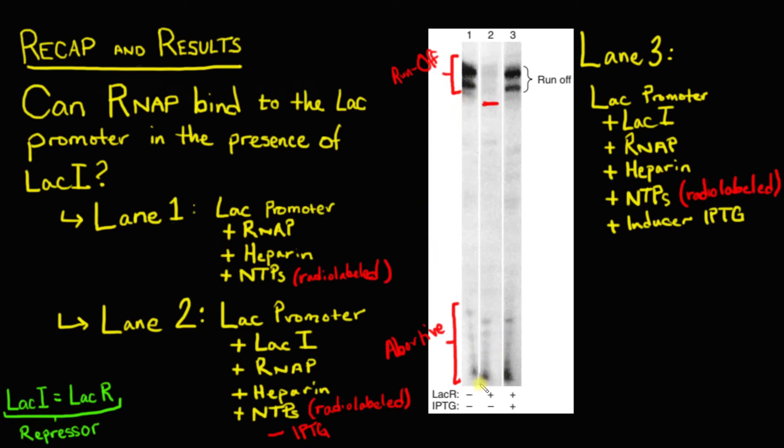So there's nothing to remove the repressor and we get no runoff transcripts. However, intriguingly, we do see the formation here of these abortive transcripts once again. So this indicates that RNA polymerase was able to bind, form an open complex with the promoter, and create these abortive transcripts, but it wasn't actually able to get past the repressor and form a full runoff transcript.